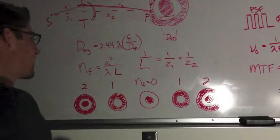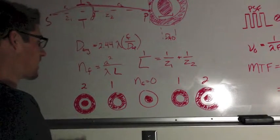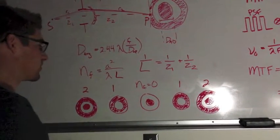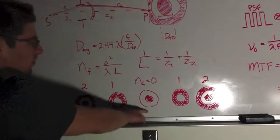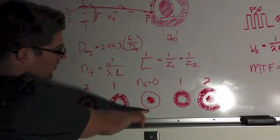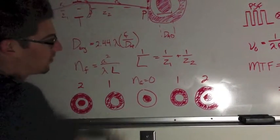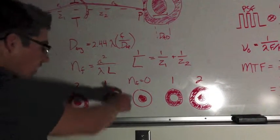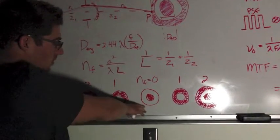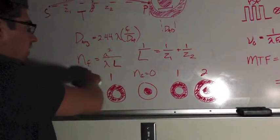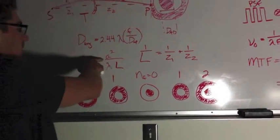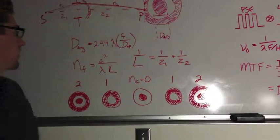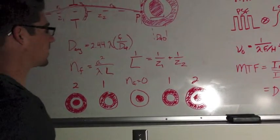In Fresnel diffraction theory, at different image points along the z-axis, different images are formed where we can see rings. These rings denote separations of half-wave optical path difference. At Nf equals zero, we see the Airy disk. The Fresnel number can be calculated by aperture radius squared over wavelength times L.